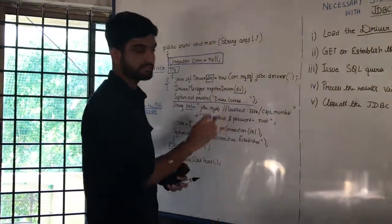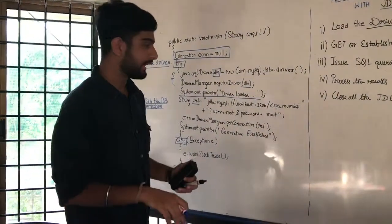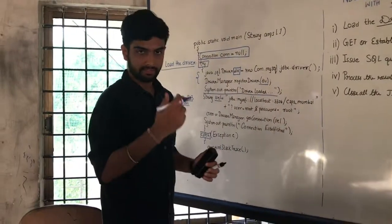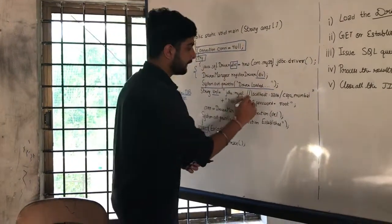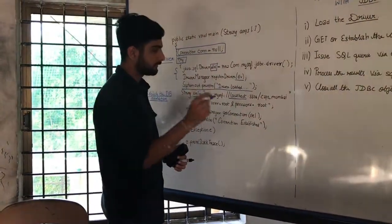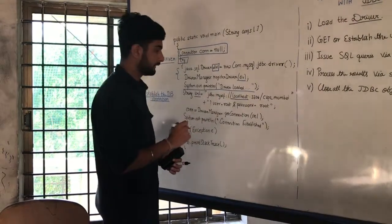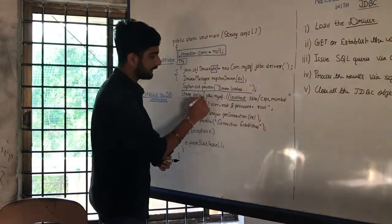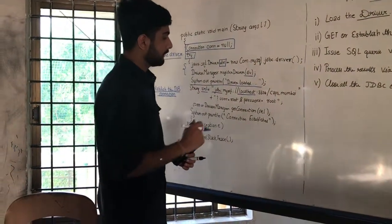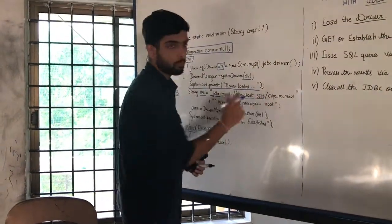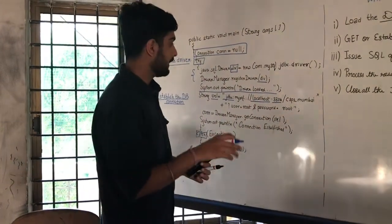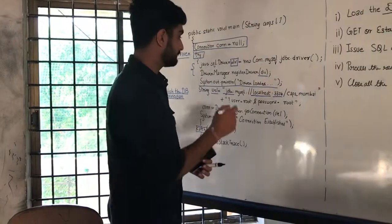It should be jdbc colon mysql that is the application, following which with the localhost since the application is installed in our system only. But, if the database or the server is in another system, then we mention the IP address or the address of the server instead of the localhost. This jdbc is basically the protocol that we mentioned in the URL. Following which 3306 is the port number which helps us to uniquely identify the application.